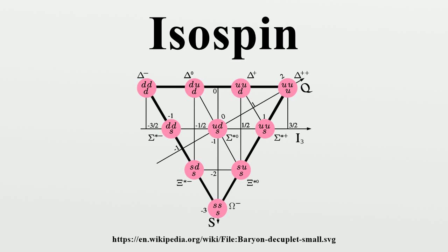Up and down quarks each have isospin I equals 1/2, and isospin z-components of +1/2 and -1/2 respectively. All other quarks have I equals 0. In general hadron nomenclature, particles of isospin 3/2 can only be made by a mix of three U and D quarks; particles of isospin 1 are made of a mix of two U and D quarks; particles of isospin 1/2 can be made of a mix of three U and D quarks or from one U or D quark with heavier quarks.